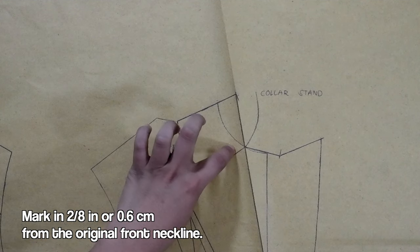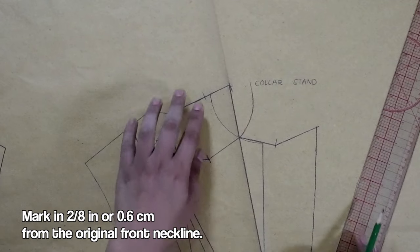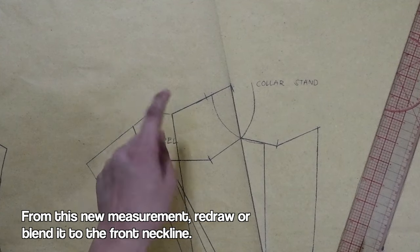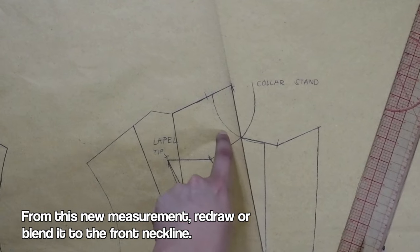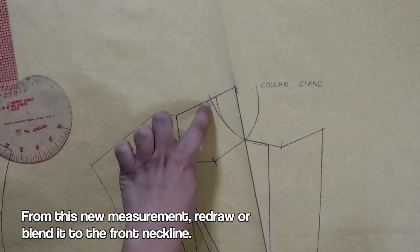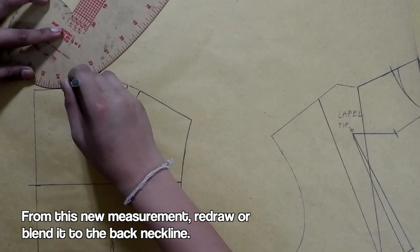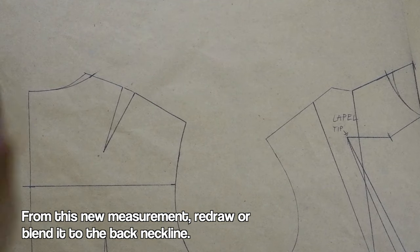Going back to the tip of the original front neckline, mark in 2/8 of an inch or 0.6 centimeter. And from this new measurement, blend it inwards to the front neckline. Do this as well on the back neck tip and blend this new measurement on the back neckline.